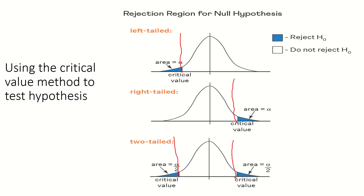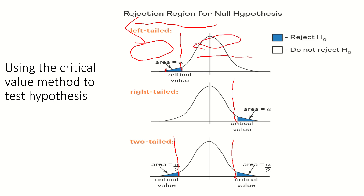This is called a left-tail test because the rejection takes place on one side, that is the left side. There are two kinds of tests: one-tail and two-tail. In a left-tail one-tail test, the rejection area is on the left side. If the calculated Z or T value falls in the rejection area, we reject the null hypothesis. If it falls in the acceptance area, we accept the null hypothesis.